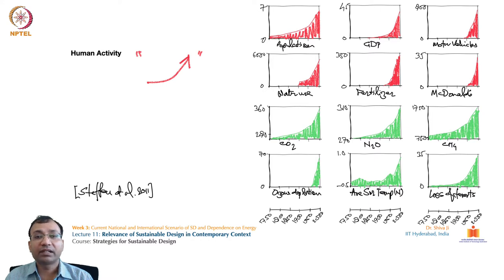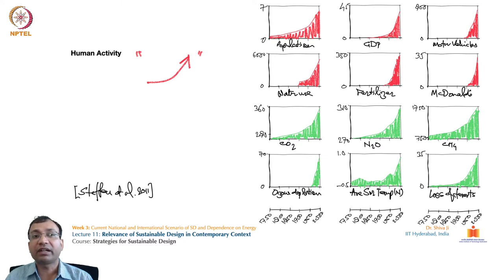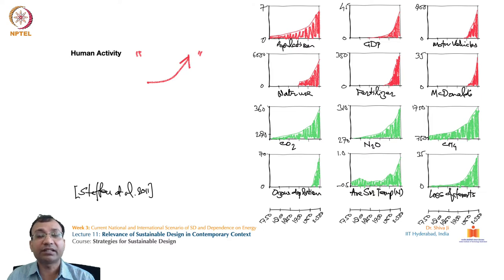Now let us see the repercussions which are happening across the planet. The first graph here is about atmospheric CO2 concentration, which has significantly increased. CO2 is one of the greenhouse gases — it absorbs heat and is responsible for global warming conditions happening across the world.